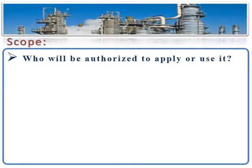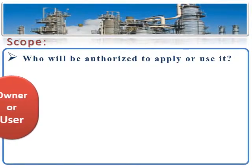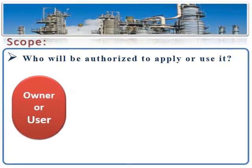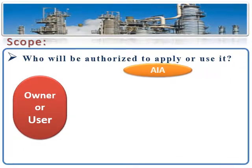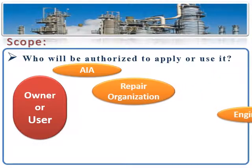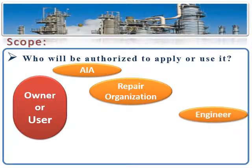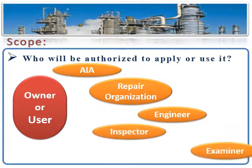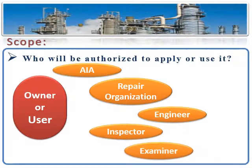The application of this inspection code is restricted to owners or users that employ or have access to the following: a) an authorized inspection agency, b) a repair organization, c) an engineer, d) an inspector, and e) examiners.